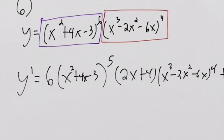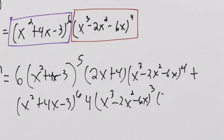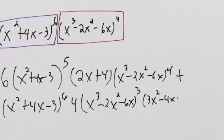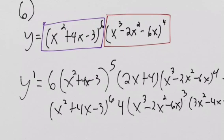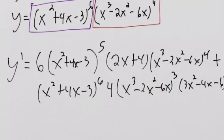Now we leave the first part, the purple one, alone: x squared plus four x minus three to the sixth. Then we multiply by the derivative of the red function, which is four times x cubed minus two x squared minus six x cubed. And we multiply by the derivative of the inside: three x squared minus four x minus six. So the full derivative is this thing up here plus this thing down here.